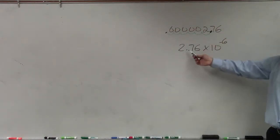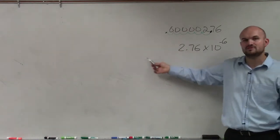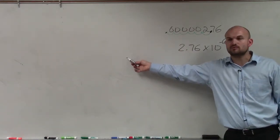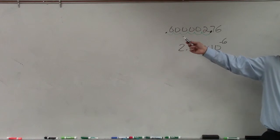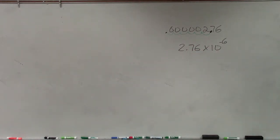Negative 6 power. Because, again, you'd take this, and you'd go six decimal places to the left would give you this answer. So you can always check your work by redoing it.